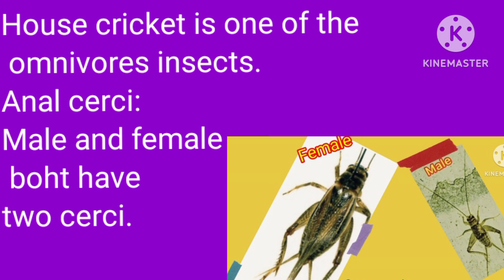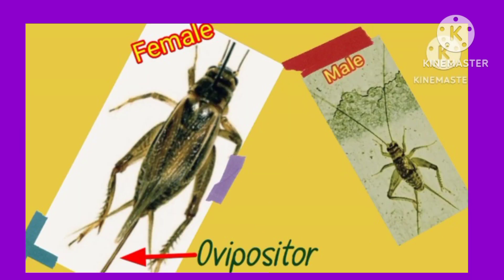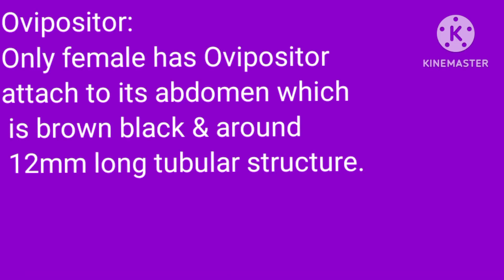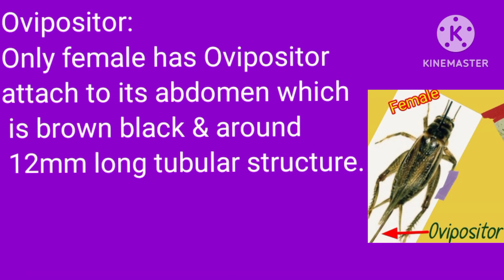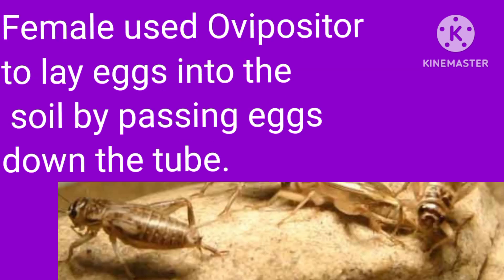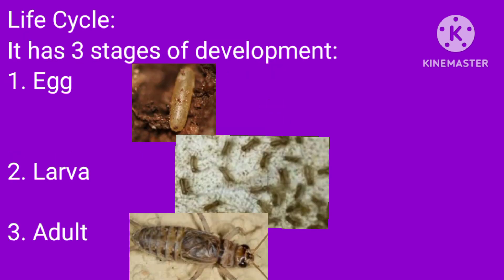The house cricket is one of the omnivorous insects. Male and female both have two cerci. As shown in the diagram, the female has an ovipositor — a brown-black, tubular structure around 12 mm long, attached to the abdomen, which females use to lay eggs into the soil by passing eggs down the tube. Its life cycle has three stages of development: egg, larva, and adult.